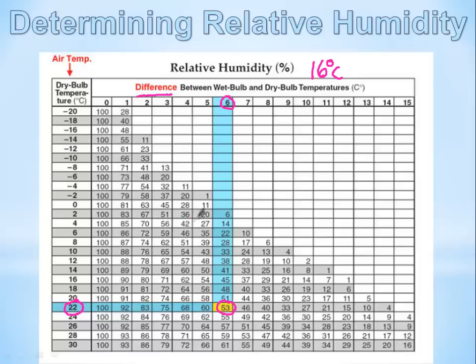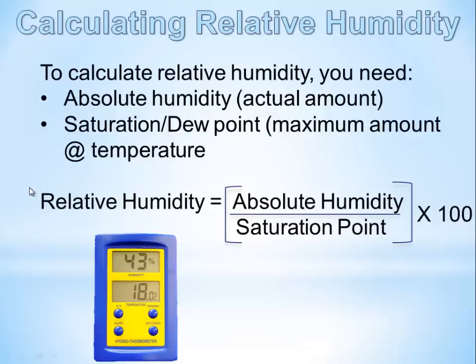The other way to find relative humidity is to calculate it. To calculate relative humidity, you need two things: the absolute humidity — the actual amount of water vapor, calculated as mass of water vapor over volume of air — and the saturation point or dew point at that particular temperature, which will be a given value you can look up on a chart. To express relative humidity, take the absolute humidity, divide it by the saturation point (the maximum amount of water vapor the air can hold), and multiply by 100 to express it as a percentage.